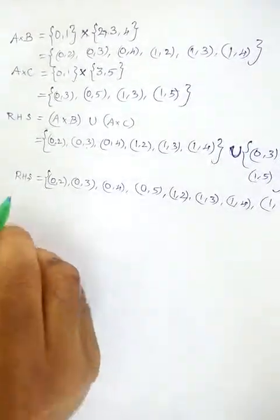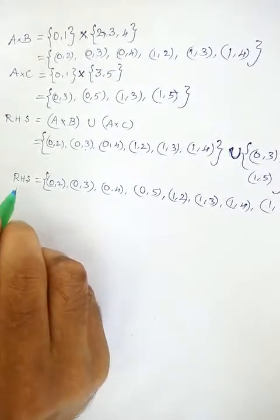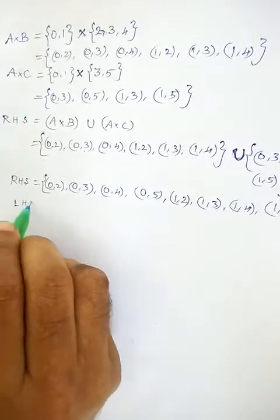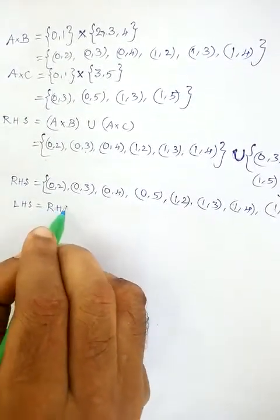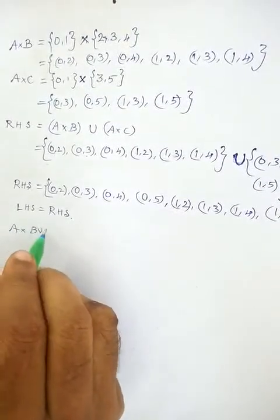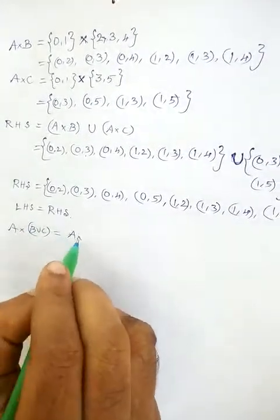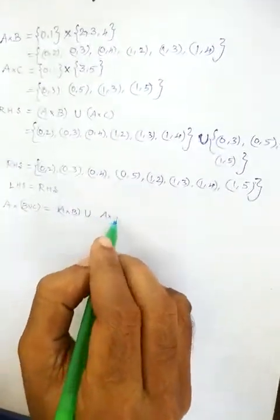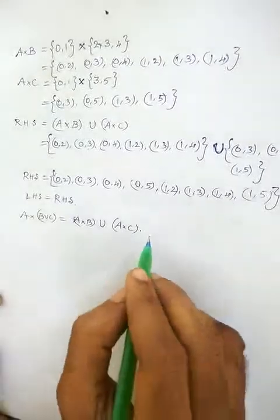Here we checked our left hand side value and right hand side value, and we proved that LHS equals RHS. That is, A cross (B union C) is equal to (A cross B) union (A cross C). This verifies the distributive law of Cartesian products over union.